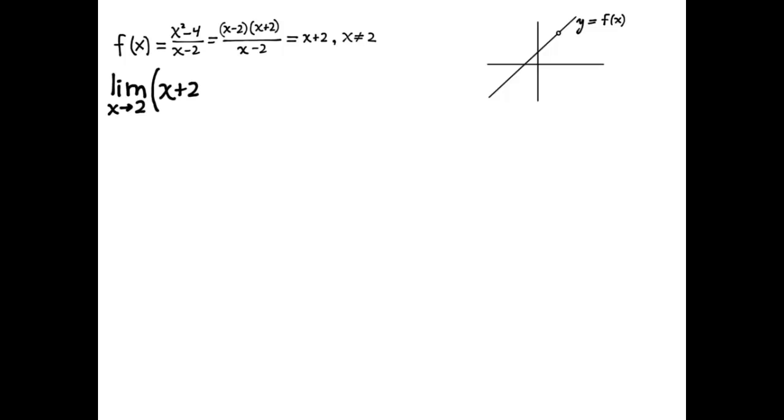So if we want to find a limit as x approaches 2 of this function we could just find the limit as x approaches 2 of x plus 2. Since the limit of x plus 2 is 4, it follows that the limit of f of x is also 4, because these two functions agree everywhere except at 2. And that's how we're going to compute 0 over 0 form limits.